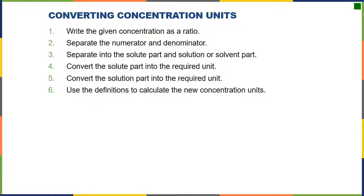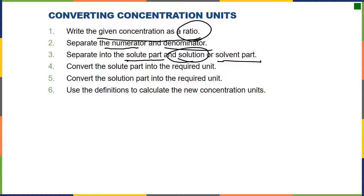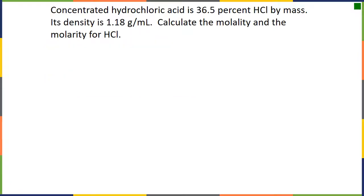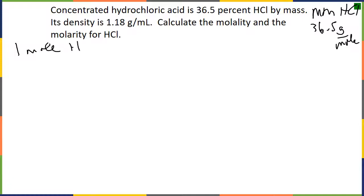When converting concentration units, start with what you're given as a ratio — for example, percent by mass (grams of solute over grams of total) or molarity (moles per liter) — and separate into numerator and denominator. You may need just the solute and solvent separately. For example, a solution that is 36.5% HCl by mass: the molar mass of HCl is 36.5 g/mol, so we conveniently get 1 mole of HCl.